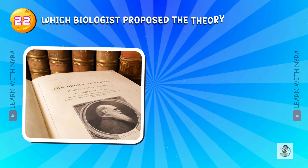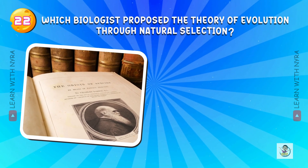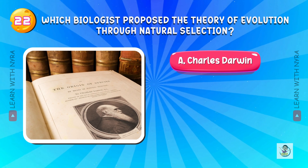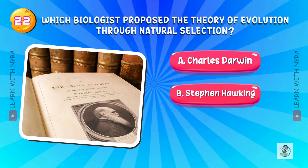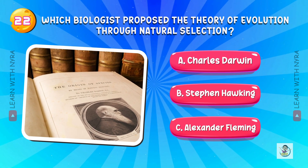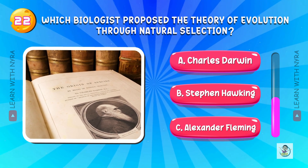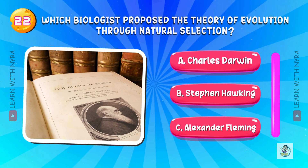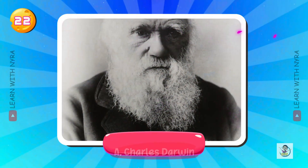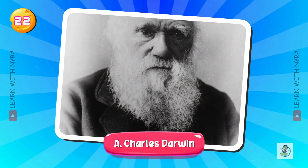Which biologist proposed the theory of evolution through natural selection? A. Charles Darwin, B. Stephen Hawking, C. Alexander Fleming. And the answer is A. Charles Darwin.